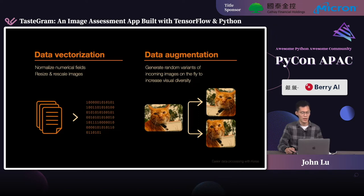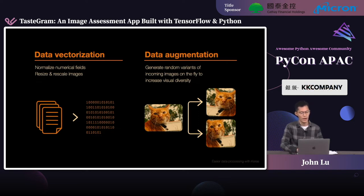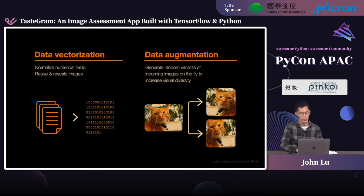There are two major use cases for data pre-processing. The first one is data normalization. Neural networks can only process numerical values, and it's usually a good idea to normalize the scale of numerical inputs to restrict them to small values, typically in the range from zero to one. The second use case is data augmentation, which is mainly used when processing images. The idea is to generate random variations of an incoming image on the fly, so as to expose your model to a greater diversity of inputs during training. It's a great strategy for small datasets, and you can train models to generalize better to new images.